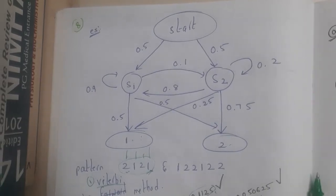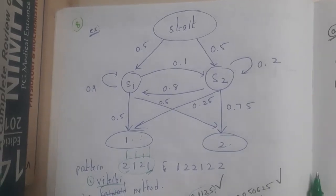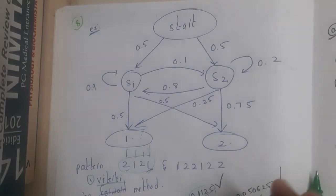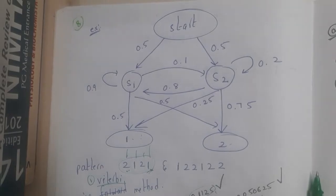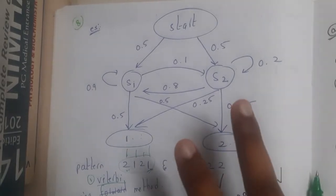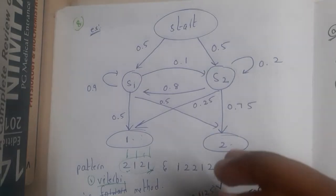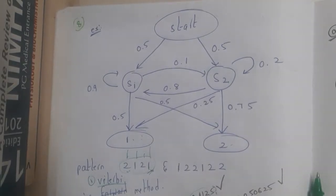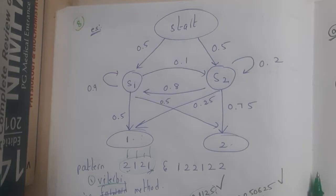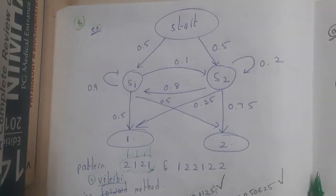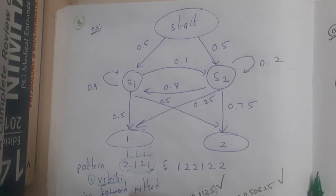Hello guys, we are back with our next lecture. In this lecture, let us go through the methodologies used in Hidden Markov Method. The two popular methodologies are Viterbi method and Forward method. Basically, in machine learning, one of the most popular things is pattern recognition - natural language processing, voice recognition - all these things are based on some patterns.